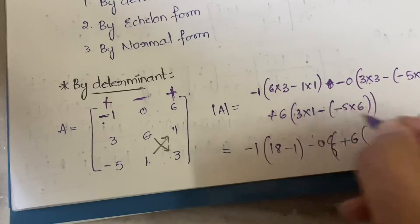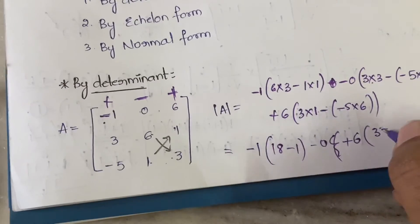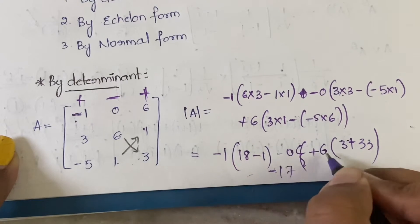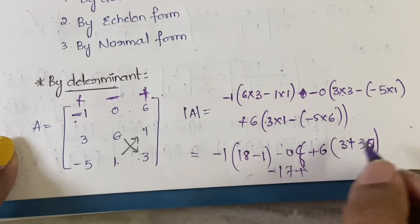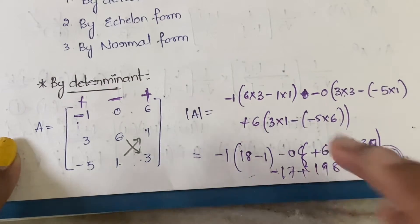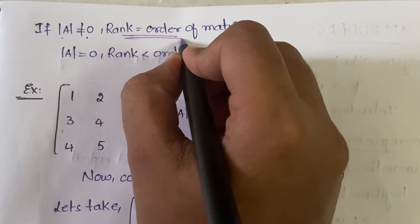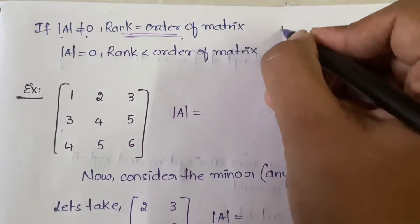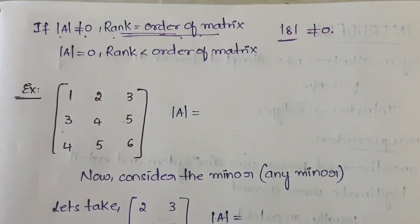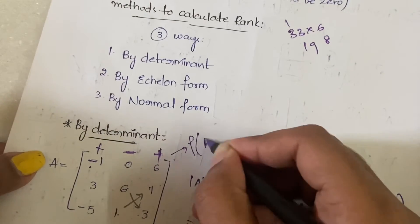Now let us calculate: minus 1 into (18 − 1) = minus 1 × 17 = −17. The zero term gives 0. Plus 6 into (3 + 30) = 6 × 33 = 198. So −17 + 198 = 181. We got the determinant as 181. If the determinant is not equal to 0, the rank equals the order of the matrix. The matrix we took is a 3×3 matrix, so the rank will be equal to 3.